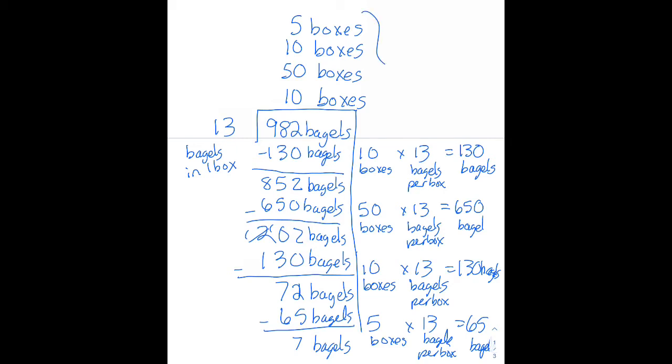So my answer is going to be the sum of all of the boxes. So I have 50 plus 10 plus 10 is 70. This is 75 boxes. And I had some left over down here,